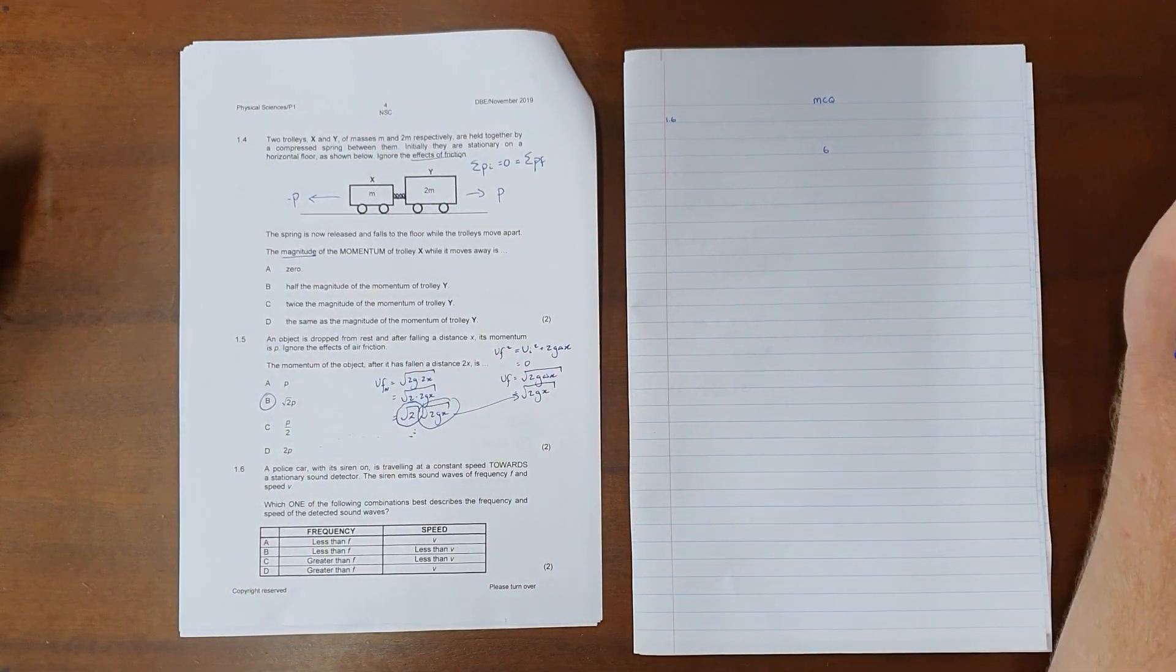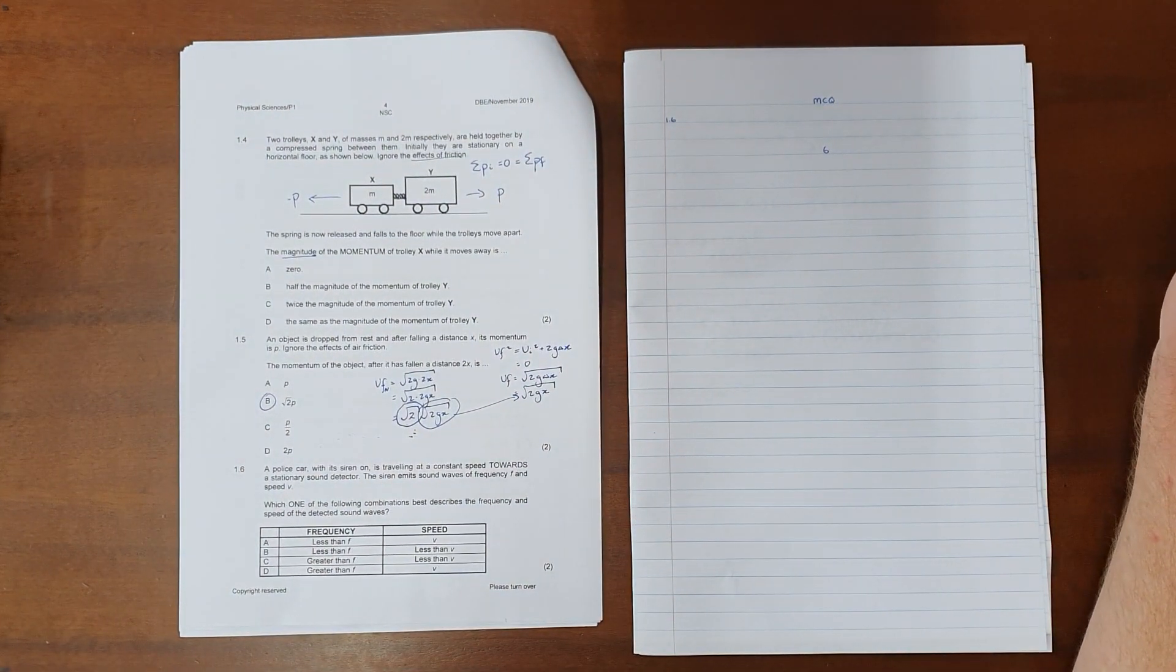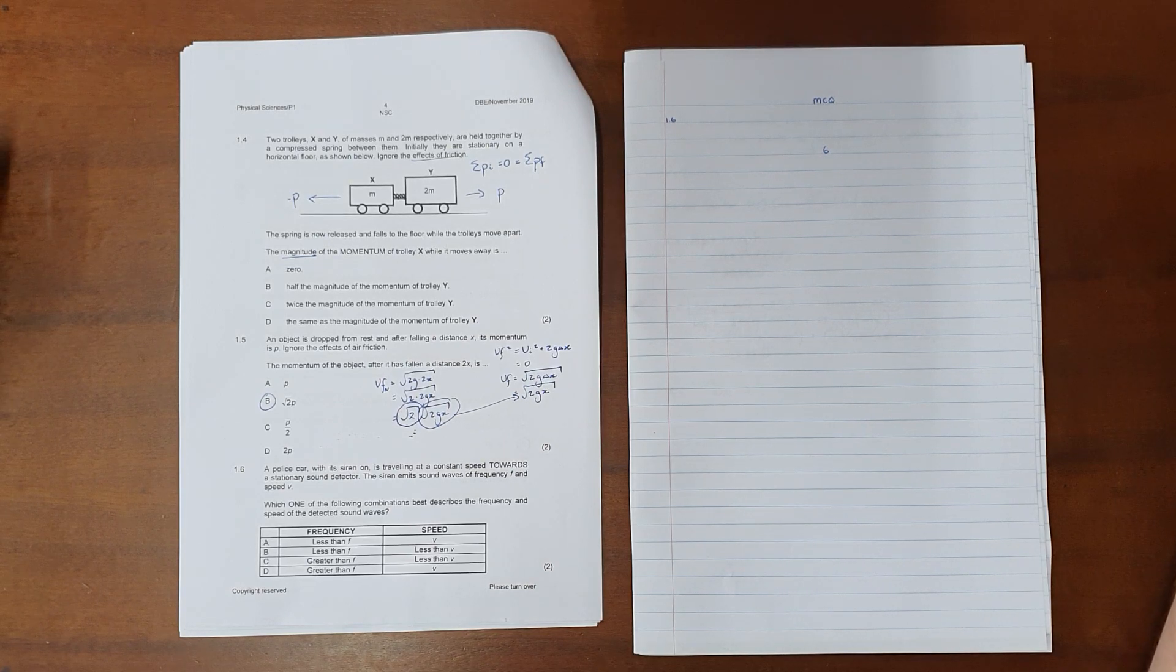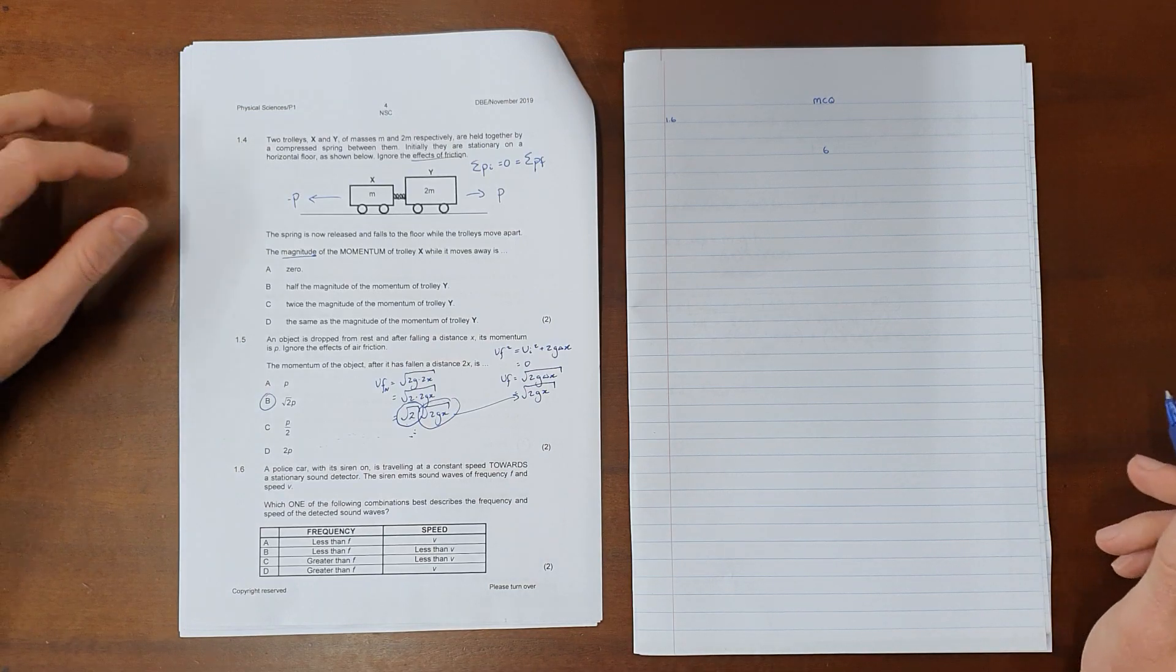A police car with its siren on is traveling at a constant speed towards a stationary sound detector. The siren emits sound waves of frequency f and speed v. Which one of the following combinations best describes the frequency and speed of the detected sound waves?